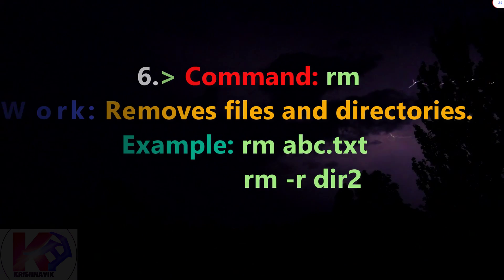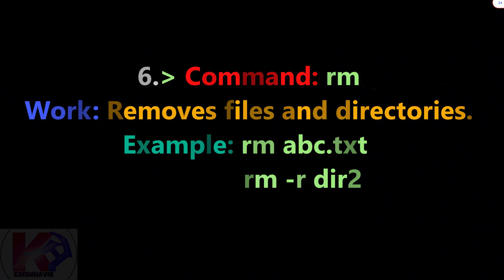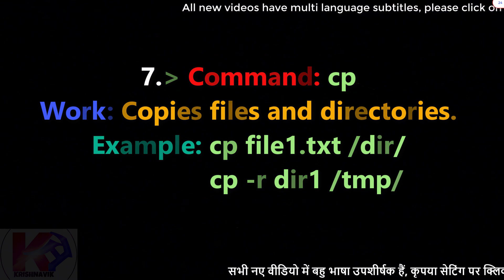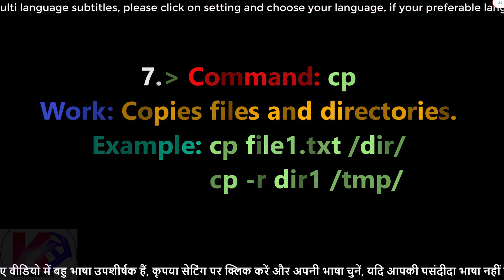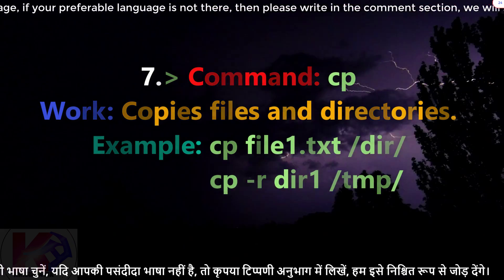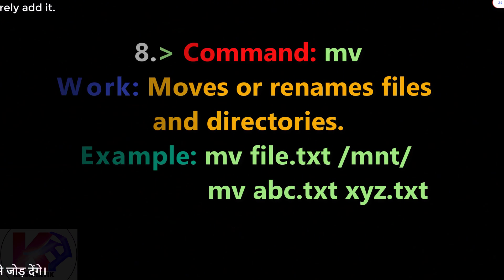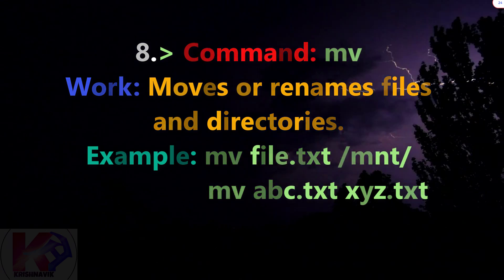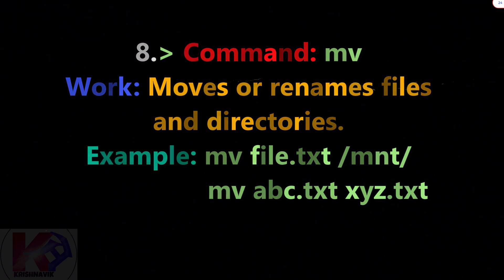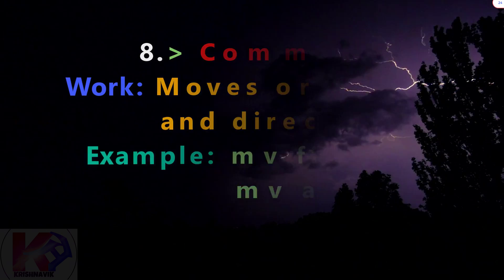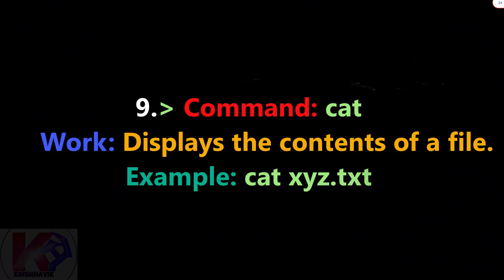Command rm: removes files and directories. Example: rm file_name or rm -r directory_name. Command cp: copies files and directories. Example: cp file_name new_location_path, or cp -r directory_name new_location_path. Command mv: moves or renames files and directories. Example: mv file_name new_location_path, or mv old_file_name new_file_name. Command cat: displays the contents of a file. Example: cat file_name.